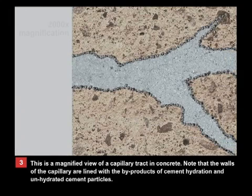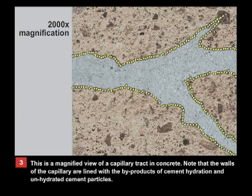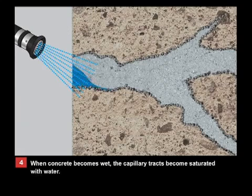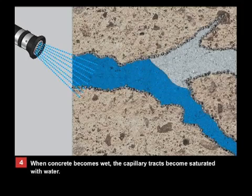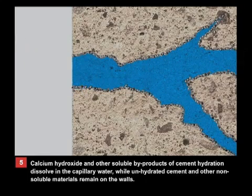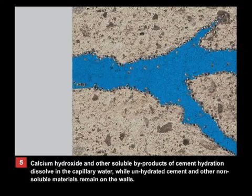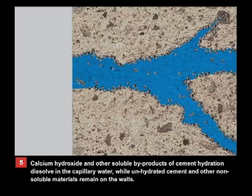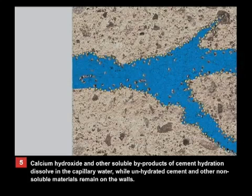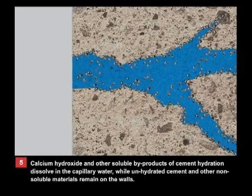This is a magnified view of a capillary tract in concrete. Note that the walls of the capillary are lined with the byproducts of cement hydration and unhydrated cement particles. When concrete is wet, the capillary tracts become saturated with water. Calcium hydroxide and other soluble byproducts of cement hydration dissolve in the capillary water, while unhydrated cement and other non-soluble materials remain on the walls.